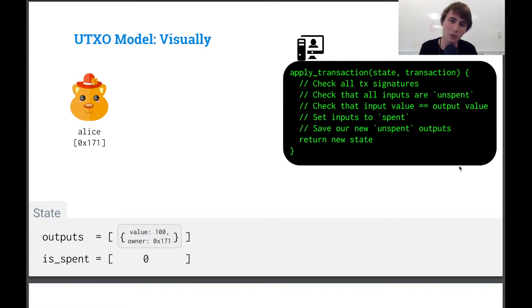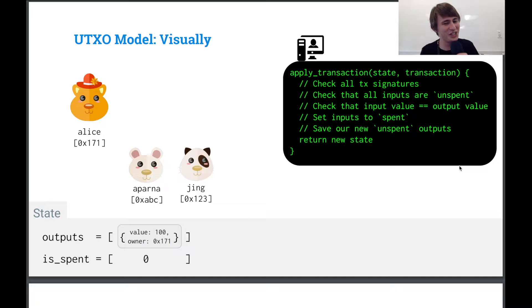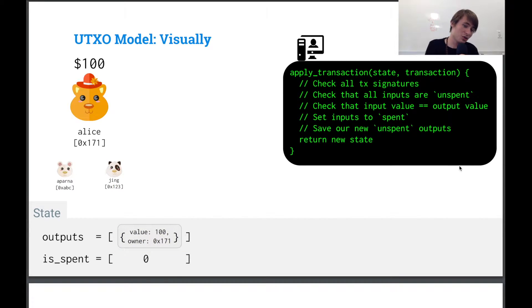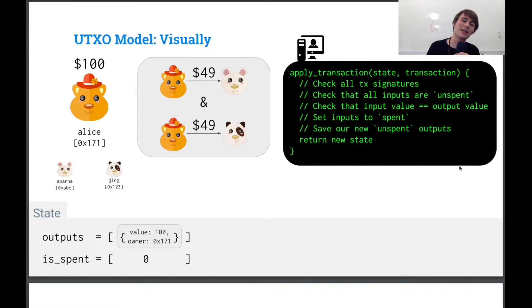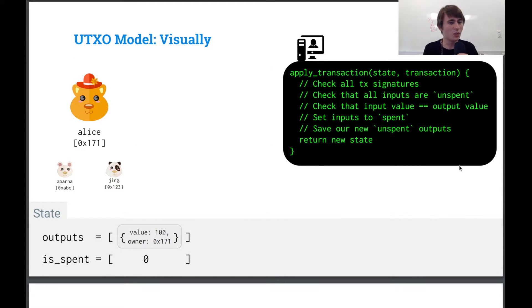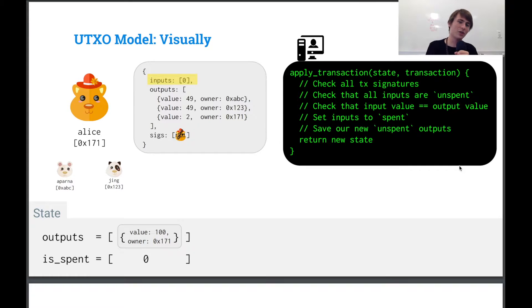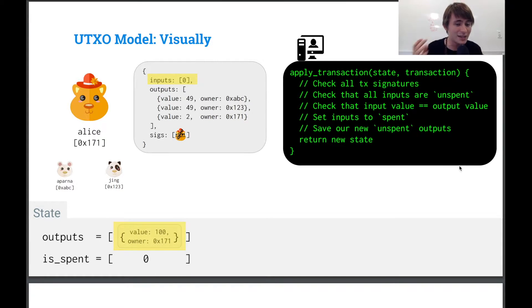So how does this work? Well, we have our function, and that is being run by our centralized payment processor. And we have Alice has $100. And she wants to send $49 to Aparna and $49 to Jing. So what does she do? Well, she generates this transaction.